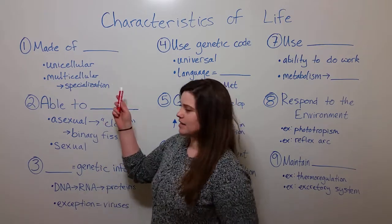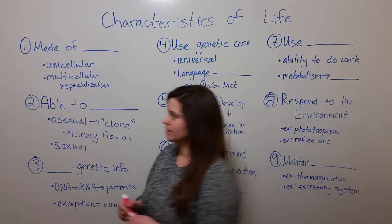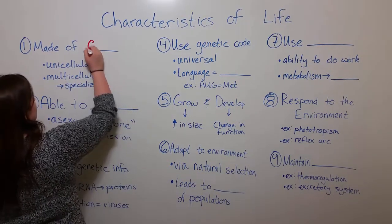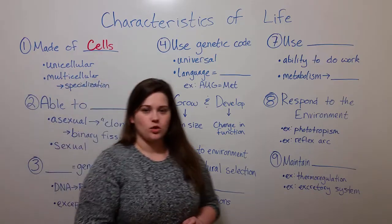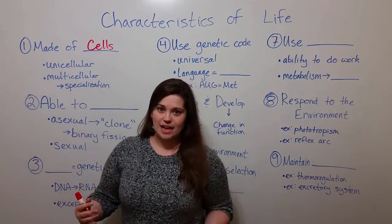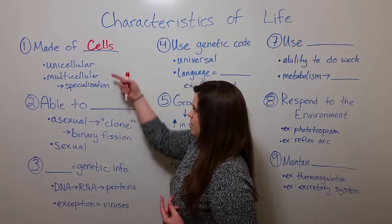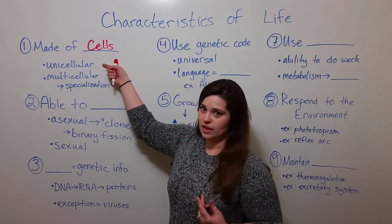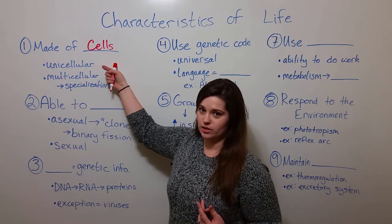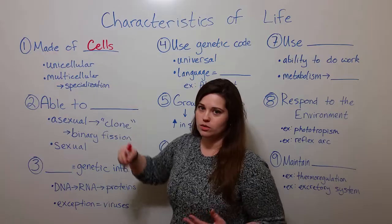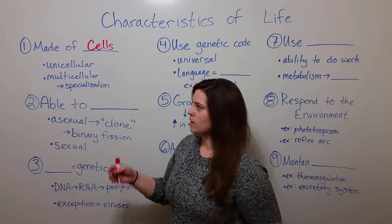The first characteristic is that all living things are made of cells. You may hear this described as all living things are cellular, and there are two types of cellularity. There are organisms that are unicellular. We often think of bacteria as being the major unicellular life forms, but there are also unicellular archaea and unicellular eukaryotes.